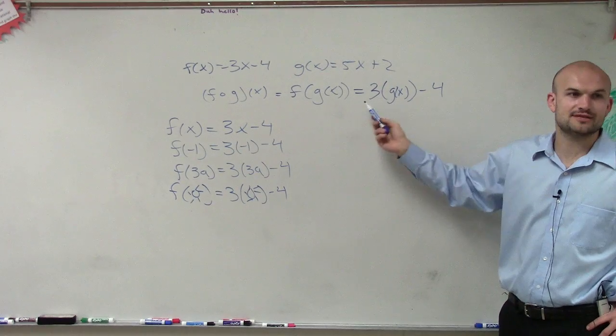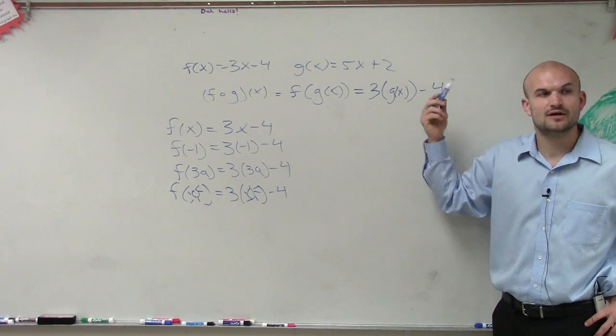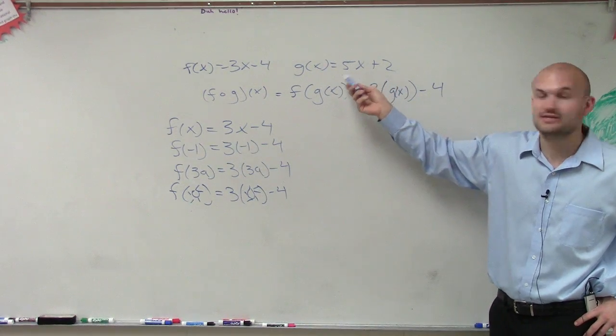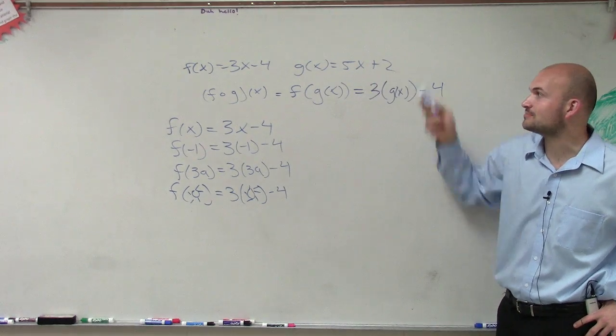Now, this doesn't really make too much sense. This is 3 times g of x. Well, I gave you g of x. So now you could say, oh, g of x is 5x plus 2.